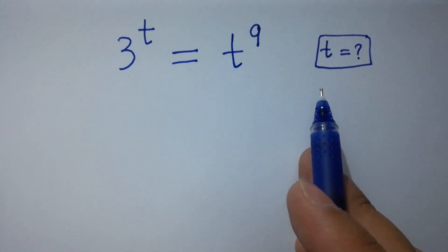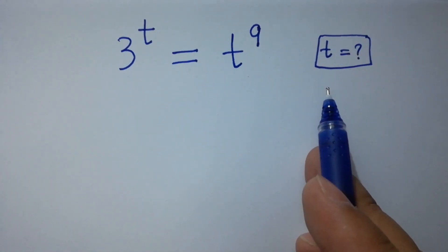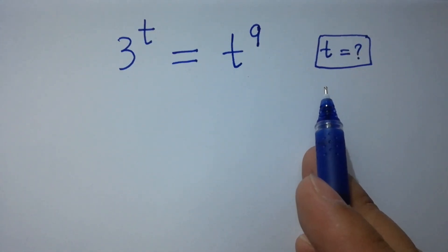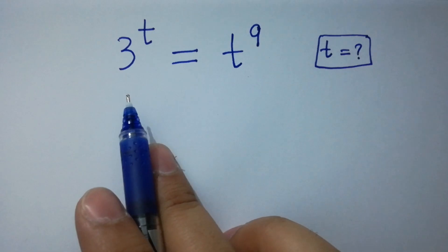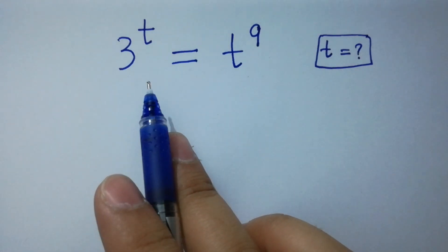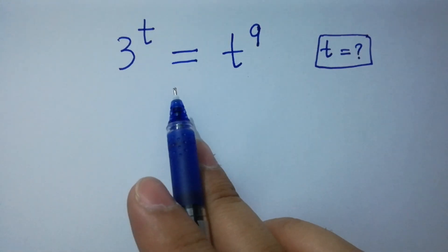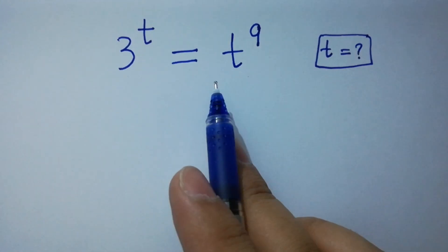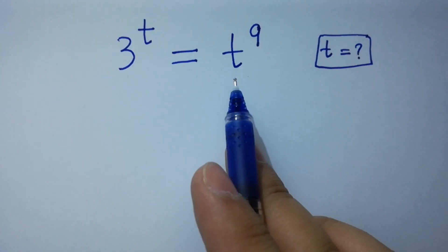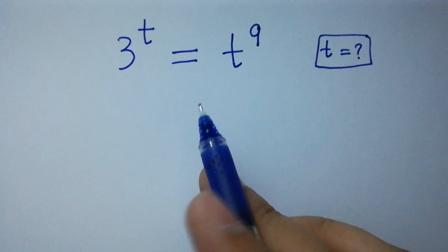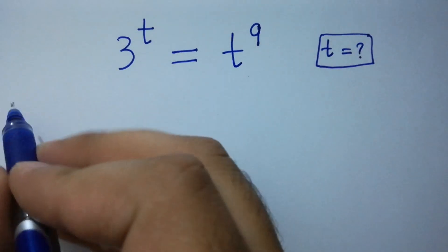Hello friends. Find the value of t if 3 to the power t equals t to the power 9. Let's have a solution.